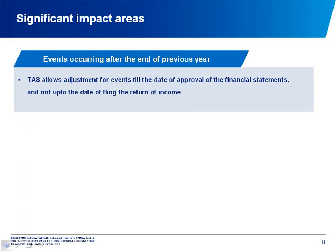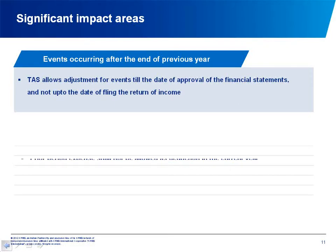On events occurring after the end of the previous year, the TAS says that for post-balance sheet adjusting events, if something requires adjustment up to the date of approval of the financial statements by the board or the approving authority, that adjustment can be made — the same as under the Companies Act. However, it does not allow adjustments for events that happen after approval of accounts and before the date the return of income is filed. This could be a change, because many companies do make changes for events happening before filing the return but after board approval.